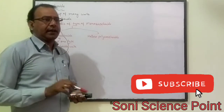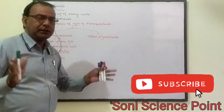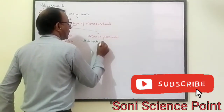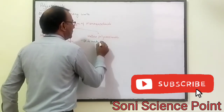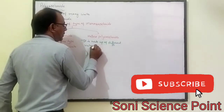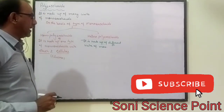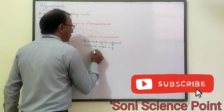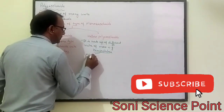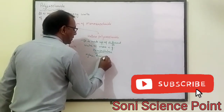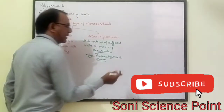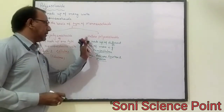The second one is hetero polysaccharide. In this polysaccharide there are different types of monosaccharide units — it is made up of different units of monosaccharide. That is called hetero polysaccharide. For example, hemicellulose. Hemicellulose may contain different types of units such as xylose, arabinose, fructose, and mannose. These different units combine and form a long chain, that is called hetero polysaccharide.